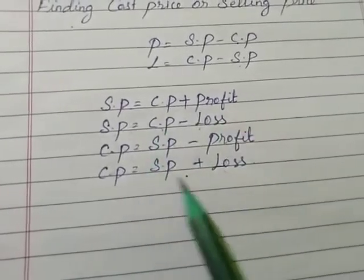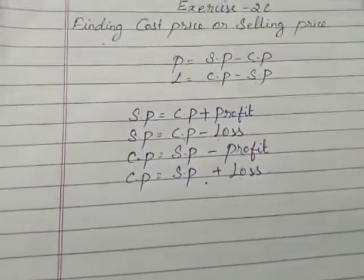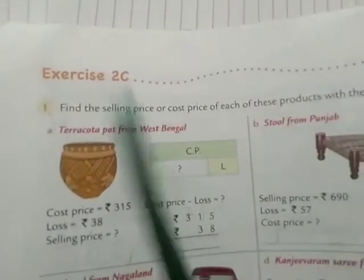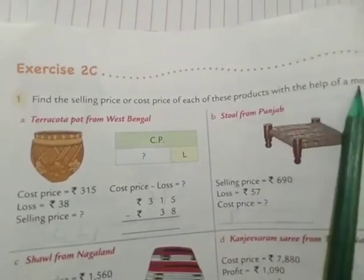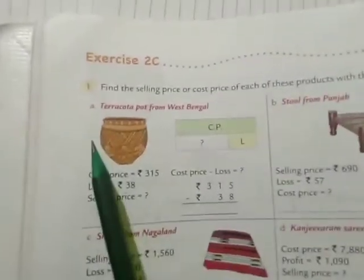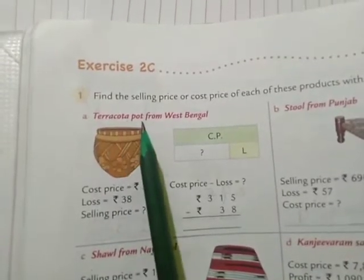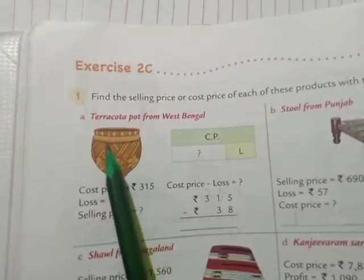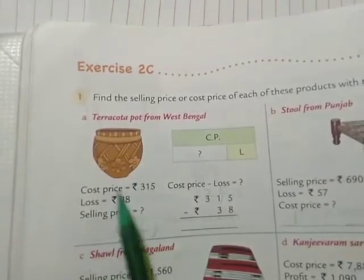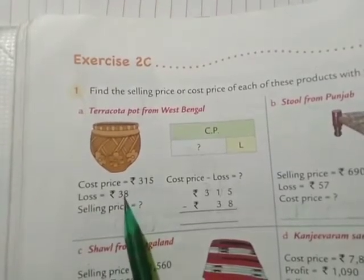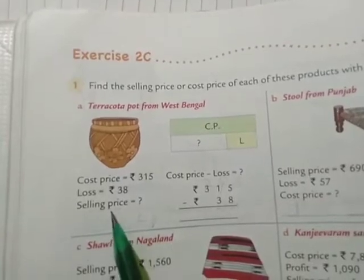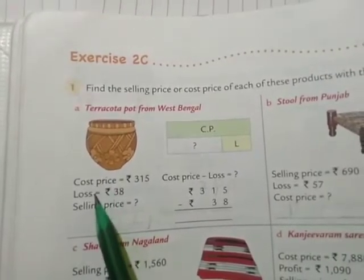These four formulas are very important to solve the sums. Let's see exercise 2C, first one: find the selling price or cost price of each of these products with the help of a model. First one — terracotta pot from West Bengal. They have given cost price rupees 315, and loss amount given is rupees 38. We are going to find selling price. In this case, cost price with loss is given, and they are asking for selling price.